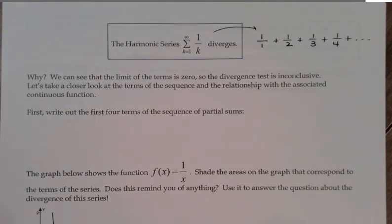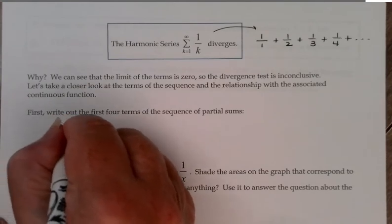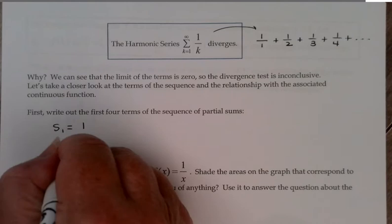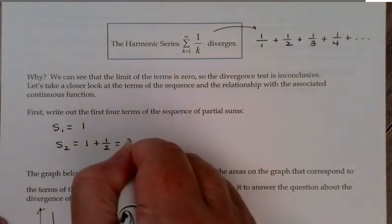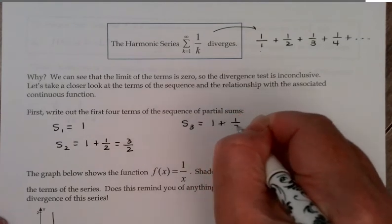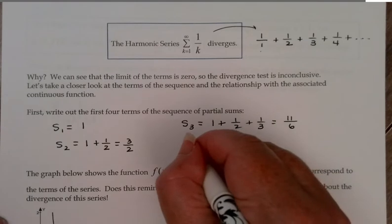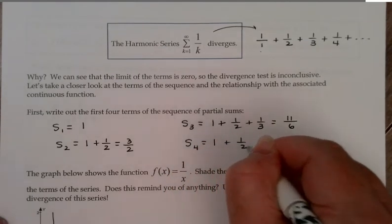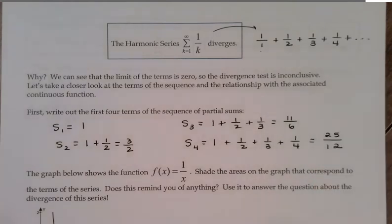I'm going to start by writing out the first four terms of the sequence of partial sums. S1 would just be the first term: 1 itself. S2, the first two terms: 1 plus 1/2 equals 3/2. S3: 1 plus 1/2 plus 1/3 is 1 and 5/6, that would be 11/6. And finally S4, the first four terms added up, gives 25/12.